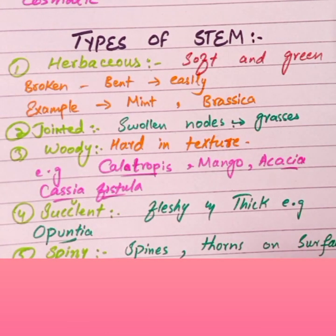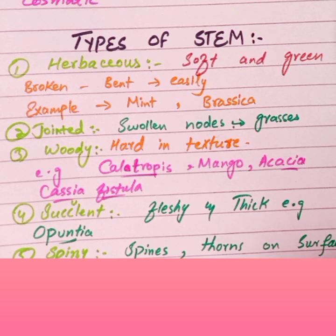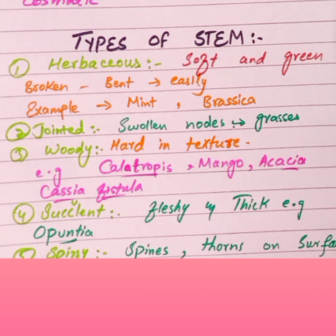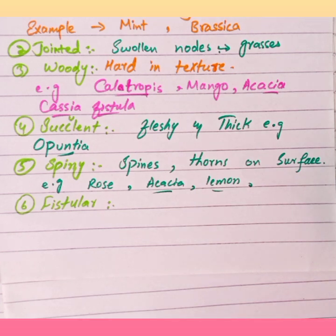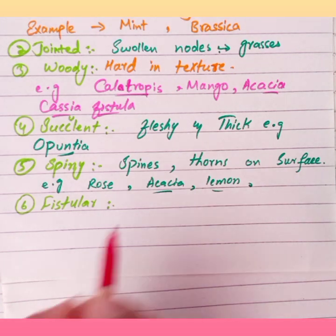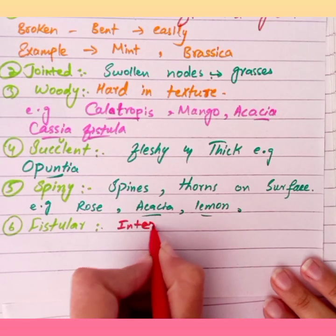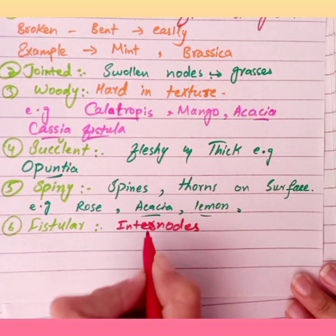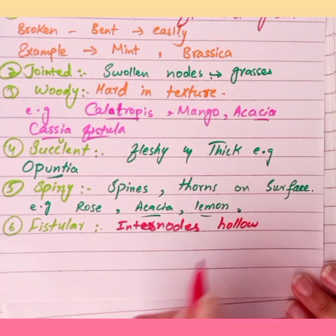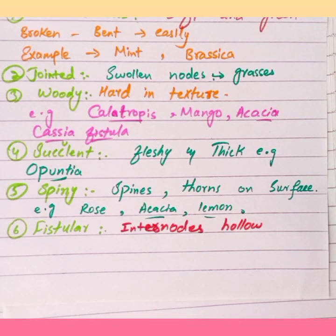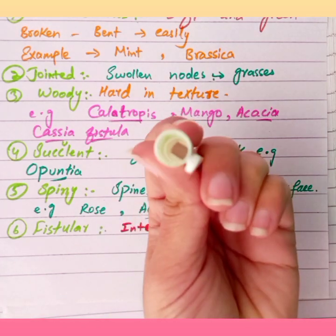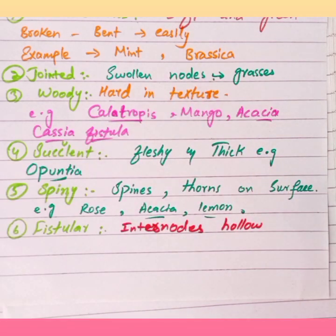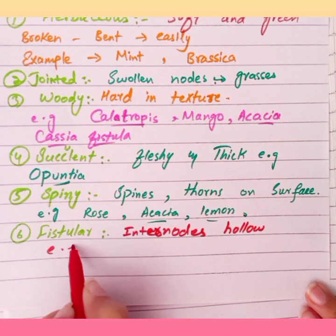The sixth type is fistular stem. In fistular stem, the internodes are hollow. The word fistular means hollow, and bamboo is a classic example of fistular stem.